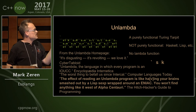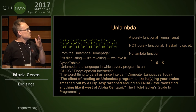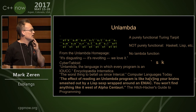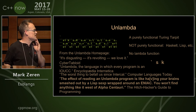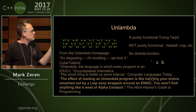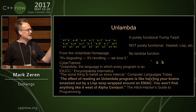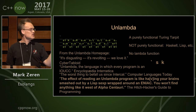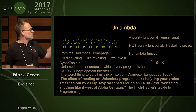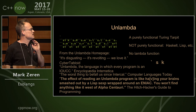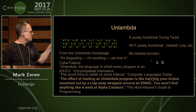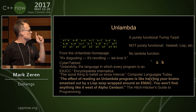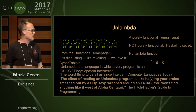The next one is Unlambda, and this is a purely functional Turing tarpit. The Unlambda people scoff at Haskell and Lisp and these other things. It's Turing complete with the backtick, s, and k instructions. There are some other built-ins that make things a little easier to type, like the Hello World up on the left. My favorite quote here is that this is the worst thing to befall us since INTERCAL.